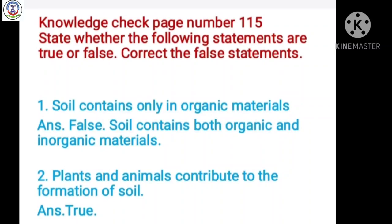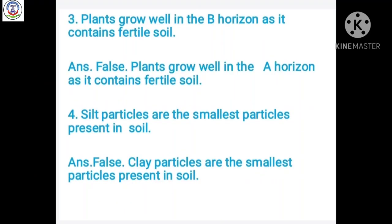Number 2: Plants and animals contribute to the formation of soil. Answer is true. Number 3: Plants grow well in the B horizon as it contains fertile soil. Answer is false. Plants grow well in the A horizon as it contains fertile soil.